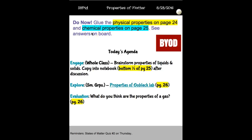Then all of your chemical properties, because there won't be enough space on page 24 to put everything, you're going to put your chemical properties, those words and definitions onto the top portion of page 25.